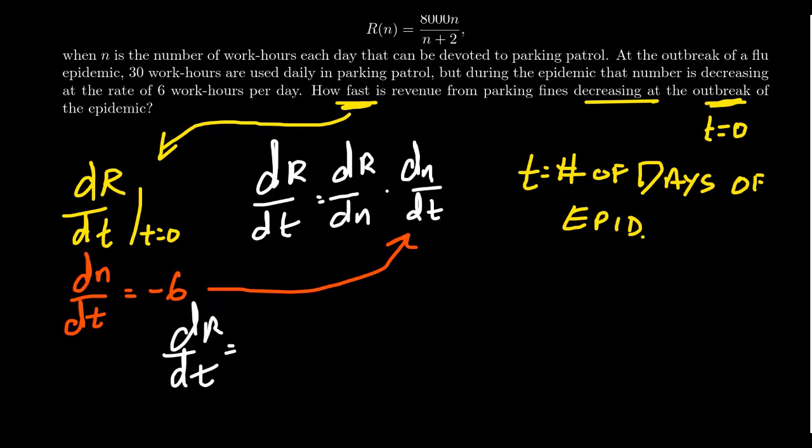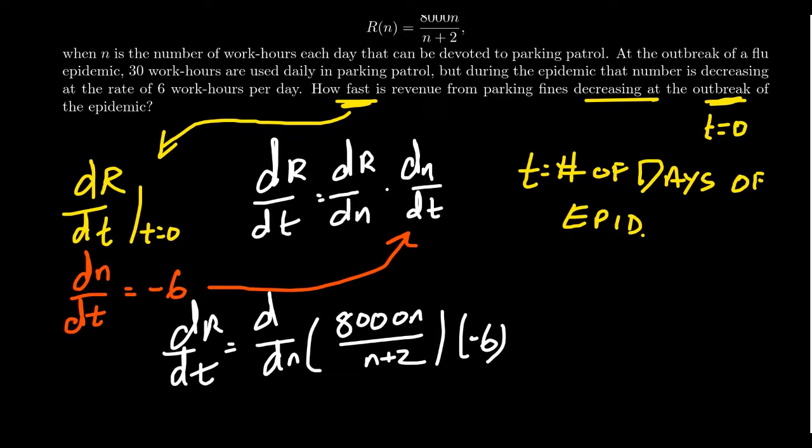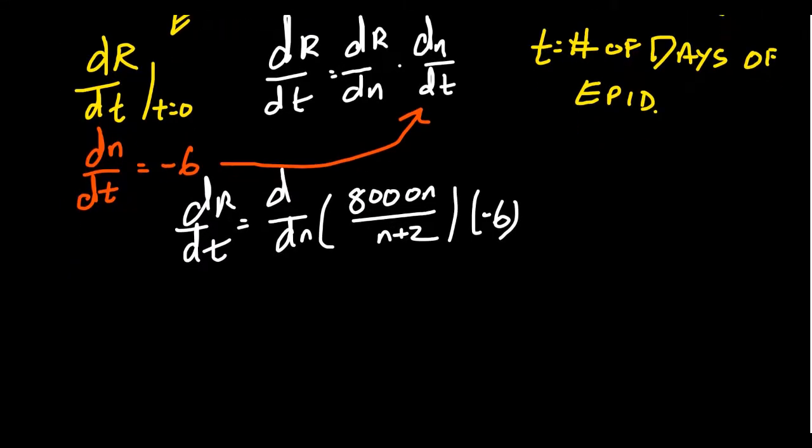This is going to equal the derivative of revenue with respect to N. The revenue function you can still see on the top of the screen, 8,000N over N plus 2. Then the change of the number of work hours with respect to time was negative six. We have to take the derivative of R(N) with respect to N, which by the usual derivative rules we can use the quotient rule. We're going to get low...